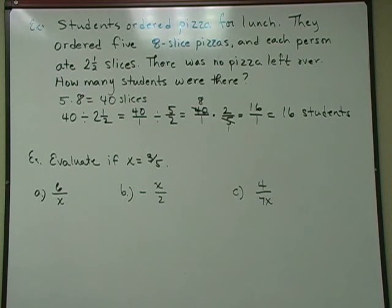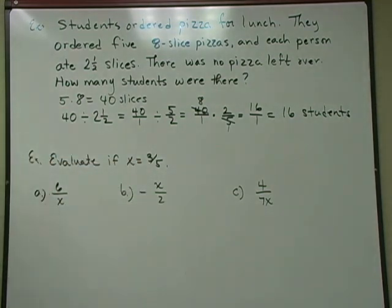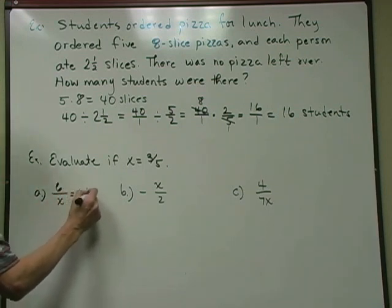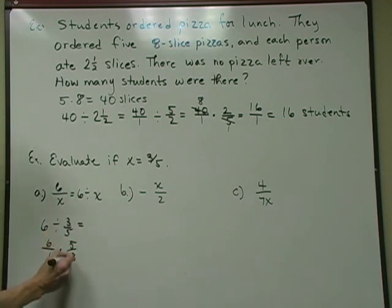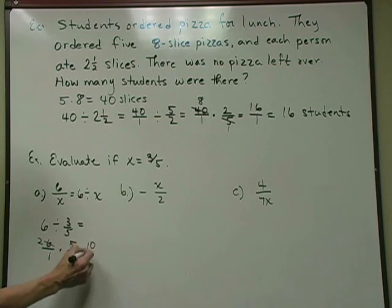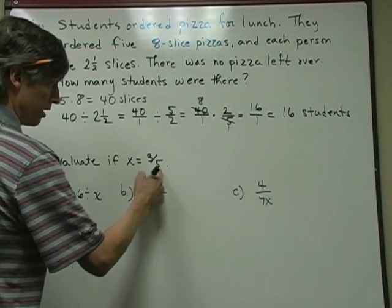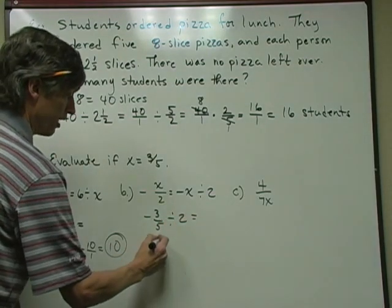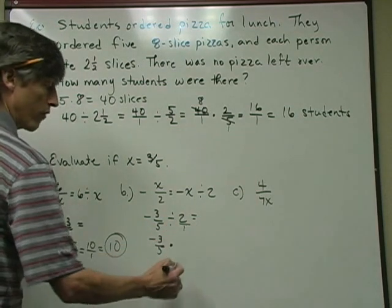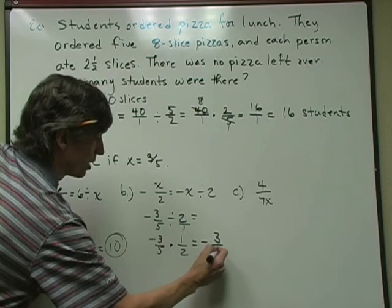There were 16 students eating pizza. Next, I'm going to evaluate expressions where x equals 3 fifths. A fraction is division — numerator divided by denominator — so 6 over x is the same as 6 divided by 3 fifths, which is 6 over 1 times the reciprocal 5 thirds. Two positive numbers — I'll cross-cancel: 3 goes into 3 once, 3 goes into 6 twice. I get 10 over 1, which is 10. Over here, the opposite of x divided by 2 is negative 3 fifths divided by 2, which is negative 3 fifths times 1 half. Negative times positive is negative. I get negative 3 tenths.